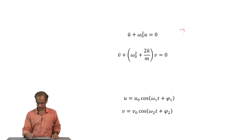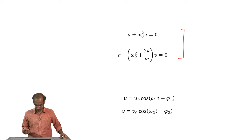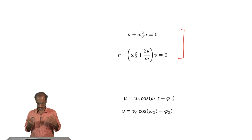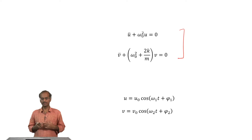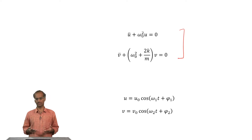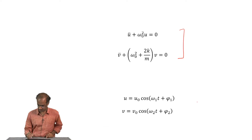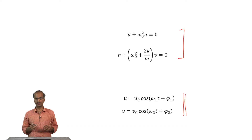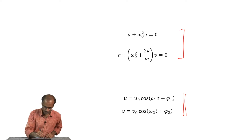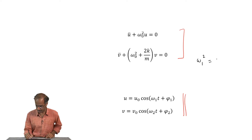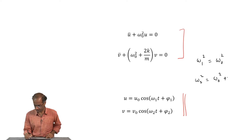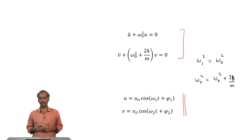Given these two equations of motion we can straight away write down the solution, because we have dealt with this in the very first week itself. The solutions are simply sine or cosine functions — I will choose to use the cosine function. There are two frequencies omega_1 and omega_2: omega_1 squared equals omega_0 squared, whereas omega_2 squared equals omega_0 squared plus 2k/m. phi_1 and phi_2 are the two phases.